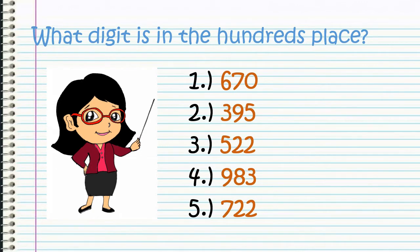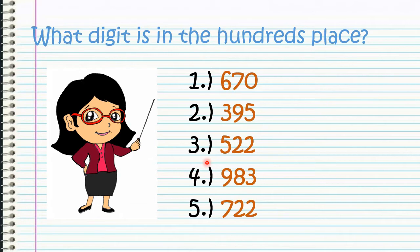Let's try to find out which digit is found in the hundreds place. We have 670 — which digit is in the hundreds place? It's number 6. How about 395? Which digit is in the hundreds place? It's number 3. How about 522? Which digit is found in the hundreds place? It's number 5. How about 983? It's number 9. And the last number, 722 — which digit is found in the hundreds place? It's number 7.